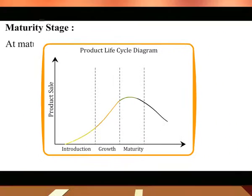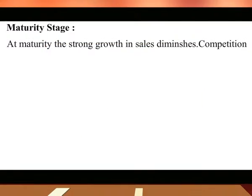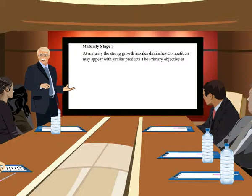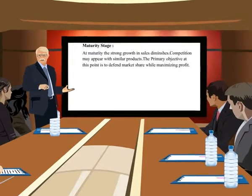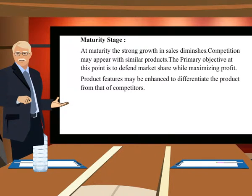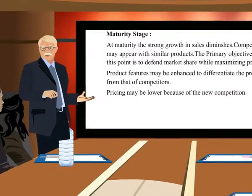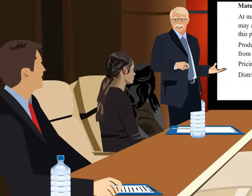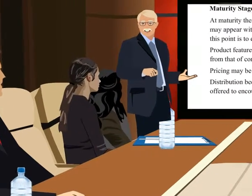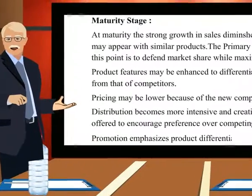Moving on to the third stage, the Maturity stage. At maturity, the strong growth in sales diminishes and competition may appear with similar products. The primary objective at this point is to defend market share while maximizing profits. Product features may be enhanced to differentiate the product from competitors. Pricing may be lowered because of the new competition. Distribution becomes more intensive and incentives may be offered to encourage preference over competing products. Promotion emphasizes product differentiation.